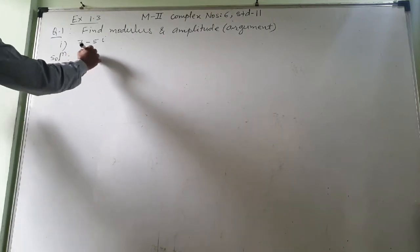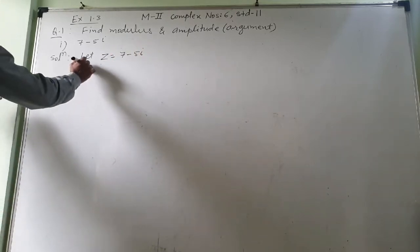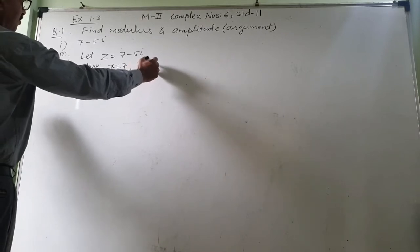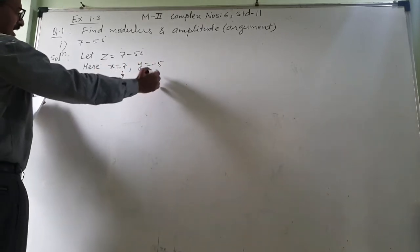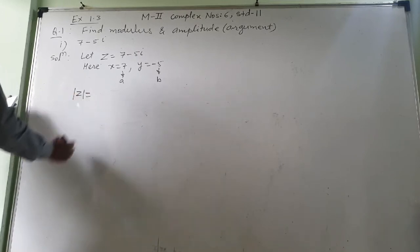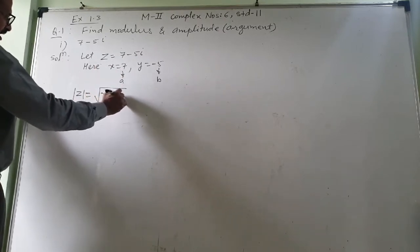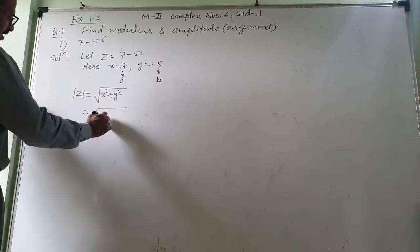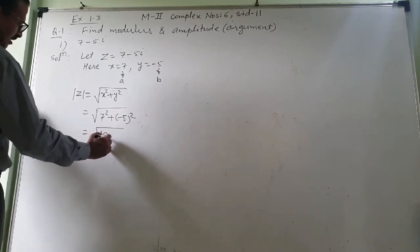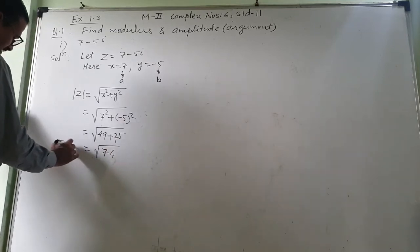Let z = 7 − 5i. Here x = 7 and y = −5. You can also call these a and b — no problem. Modulus of z equals under root of x² + y², which is under root of 7² + (−5)² = under root of 49 + 25 = under root of 74.